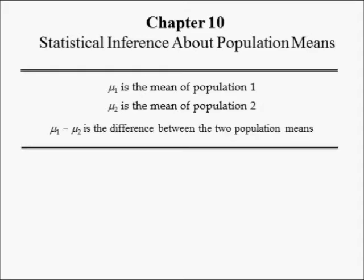Mu1 minus mu2 is the difference between two population means. If Brand A lipstick remains on lips longer than Brand B, then mu1 minus mu2 is positive.